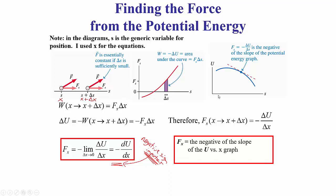If I have a graph of u versus position, I find the slope at a point — which is the derivative — and the force is the negative of that slope. That's one of the most common things people forget. They look at a graph and say the slope is negative so the force is negative. But if the slope is negative, then the force is actually positive.